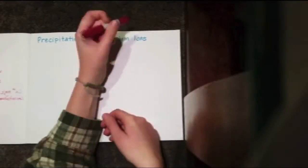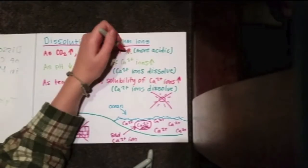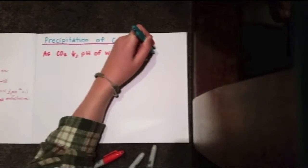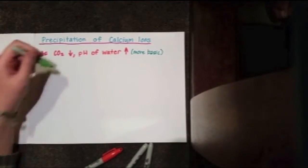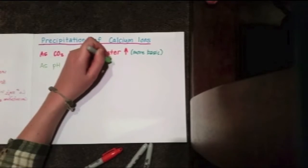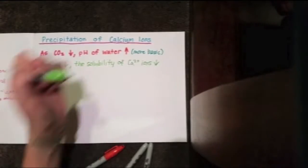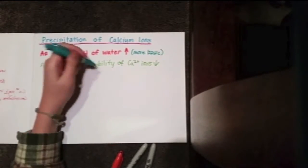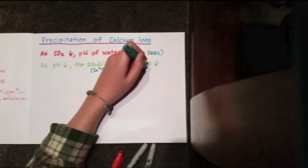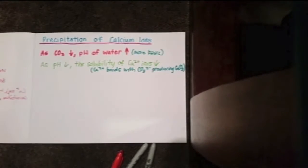Now that we've seen dissolution of calcium carbonate, we can take a look at the precipitation of calcium carbonate. As the partial pressure of carbon dioxide goes down, the pH of the water goes up, resulting in the water becoming more basic. As the pH goes up — sorry, that arrow right there is supposed to be pointing up for pH, not down — the concentration of the calcium ions goes down. This results in bonding between calcium ions and carbonate ions that precipitate out as limestone.